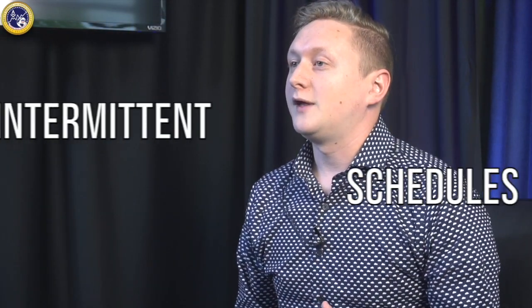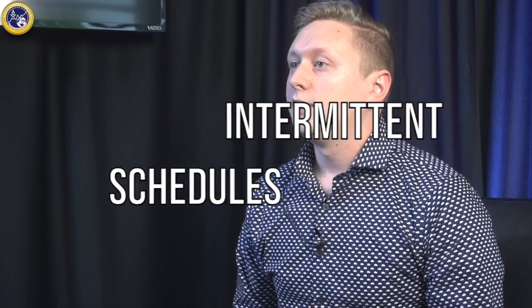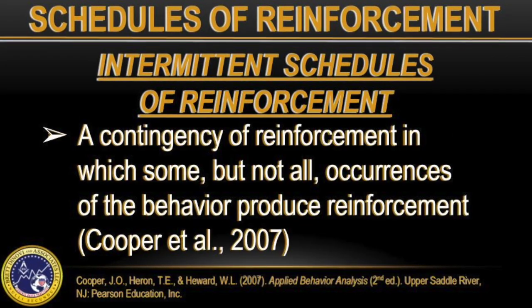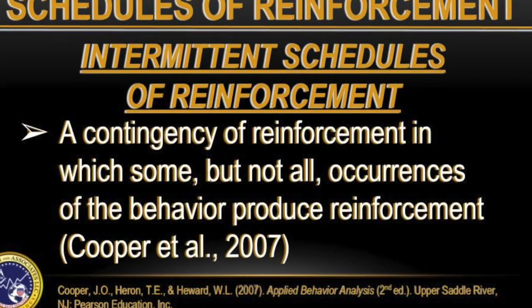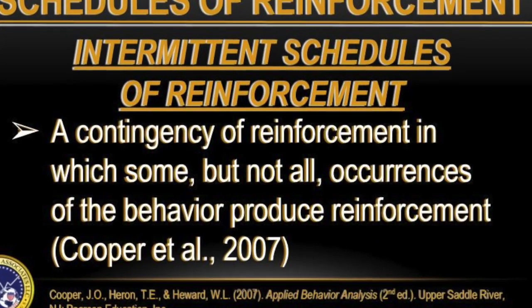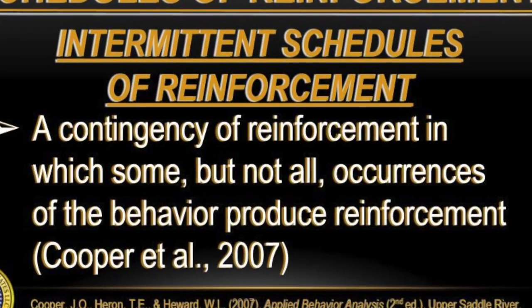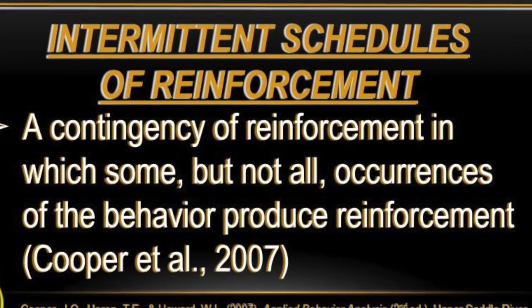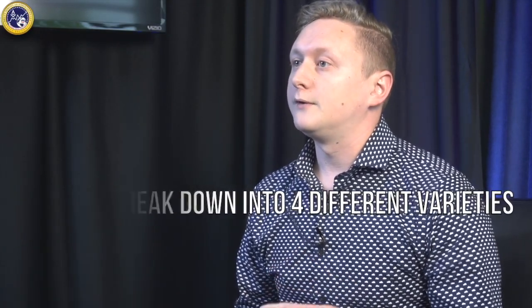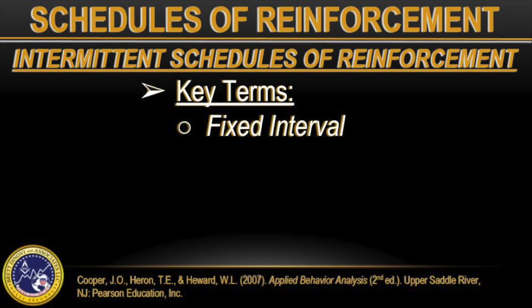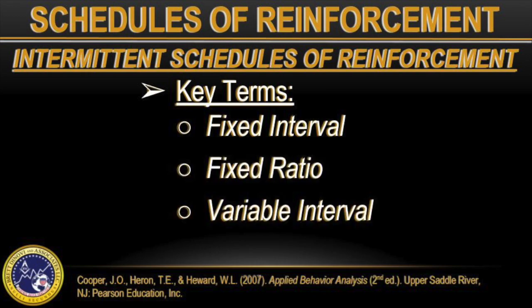The next type of schedule is intermittent schedules. An intermittent schedule of reinforcement is defined as a contingency of reinforcement in which some, but not all, occurrences of the behavior produce reinforcement. Intermittent schedules break down into four different varieties: fixed interval, fixed ratio, variable interval, and variable ratio.